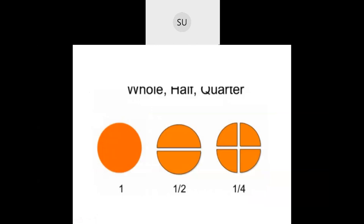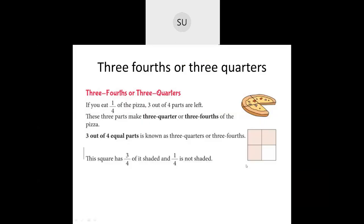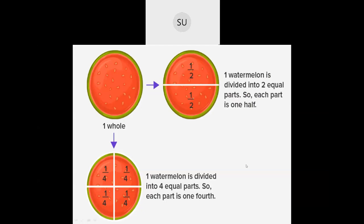So this is whole, half, and quarter. Now see this watermelon. This watermelon is divided into two equal parts, so each part is one half. Further if you divide this watermelon into four equal parts, each part is a quarter or one fourth. It is read as one fourth or a quarter. This is all about wholes and parts.